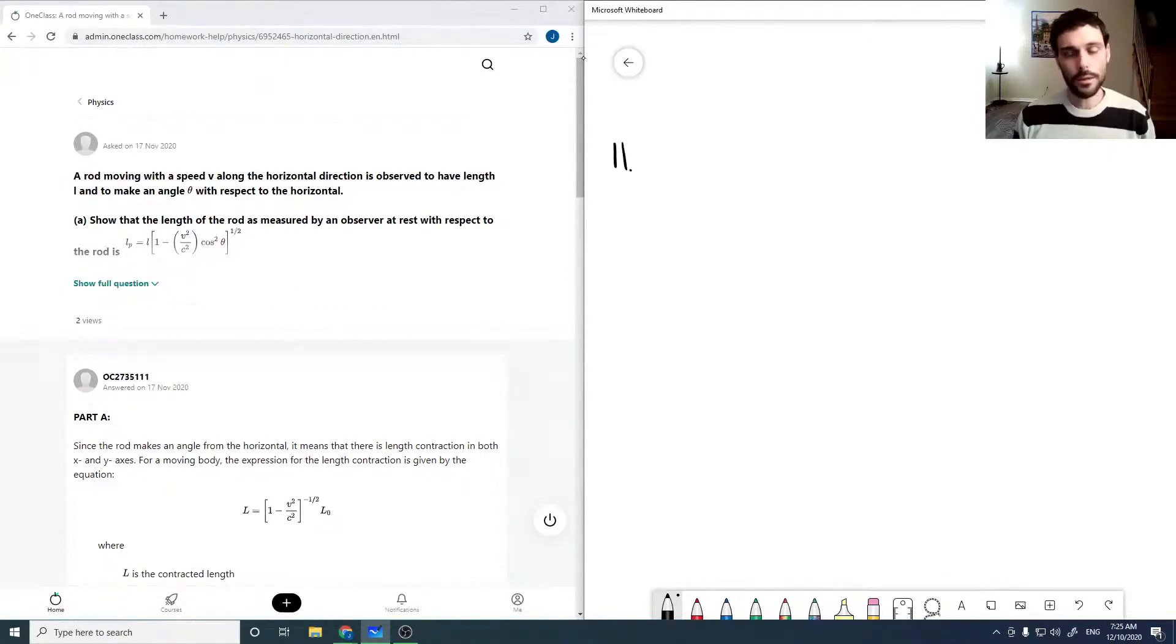So we've got a rod of length L, which is at some angle theta with respect to the horizontal, and the rod's moving with a velocity V.